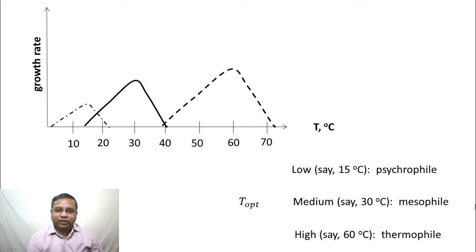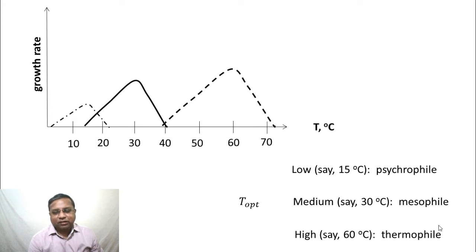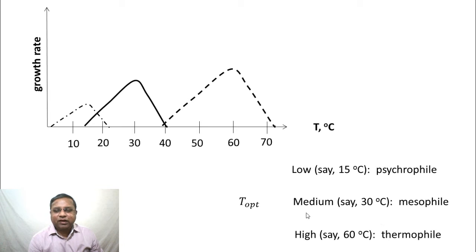Most organisms used in industry are mesophiles, because it is much easier for temperature maintenance. A lot of effort and energy goes into maintaining very low or very high temperatures. Unless the product is exotic with a huge market, psychrophiles or thermophiles are not normally used — mesophiles are predominantly used in industry.